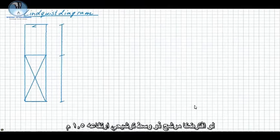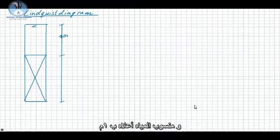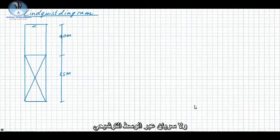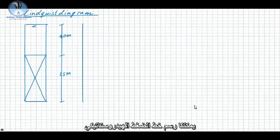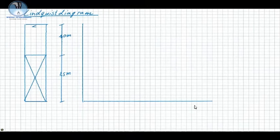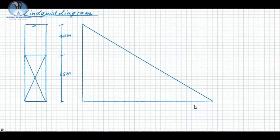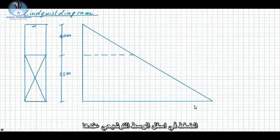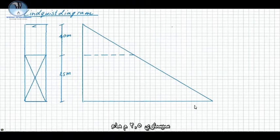When we consider a filter with a filter bed height of 1.5 meter and a supernatant water level of 1 meter above the filter bed, and there is no flow through the filter, then we can draw the hydrostatic pressure line. The pressure at the bottom of the filter bed is then 2.5 meter water column.